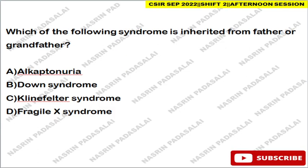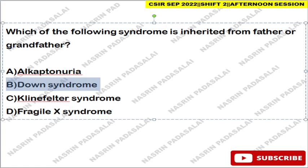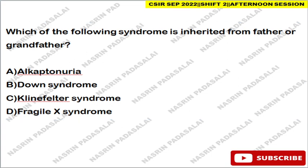Next: which syndrome is inherited from father or grandfather? All options I think are incorrect because diseases transmitted from father through grandfather involve Y-linked (holandric) inheritance — only Y chromosome traits pass from father to son to grandson. Down syndrome has an extra copy of chromosome 21; Klinefelter syndrome has an extra X chromosome; Fragile X syndrome follows an X-linked dominant pattern. So Fragile X is not the correct answer. I will confirm once the official question paper is released.